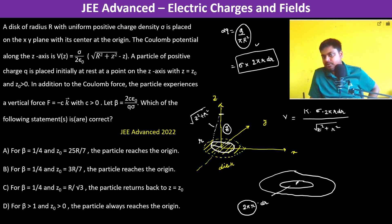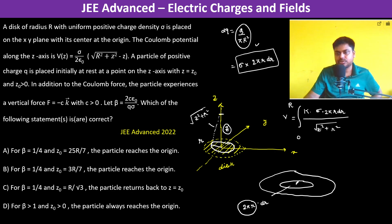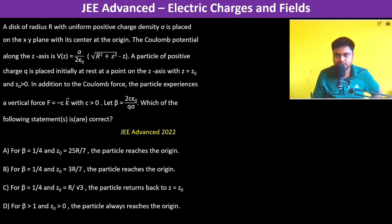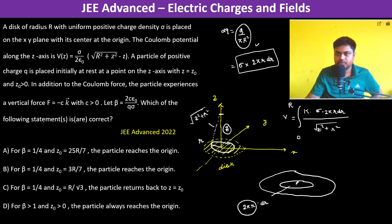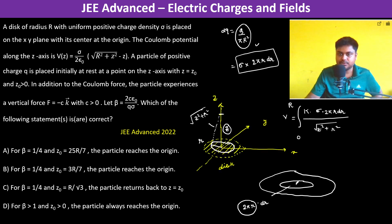This is the potential because it's k·q/r. Now we integrate from r = 0 to r = R, so the total potential becomes k·sigma·2π times the integral of r·dr / √(z² + r²) from 0 to R.